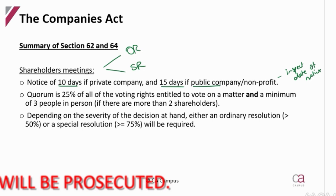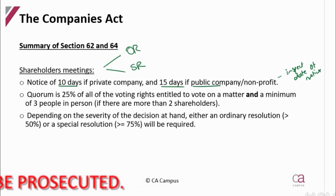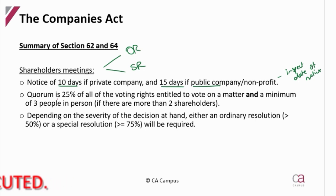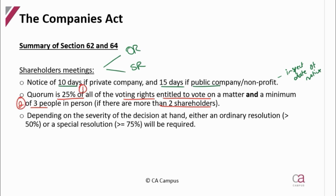For the meeting to be able to take place, the quorum for your shareholders is 25% of the voting rights that are entitled to vote on the matter. And where they have more than two shareholders, three people also have to be present. So there are two quorums for shareholders that you are going to have to check are achieved before the decision is made.